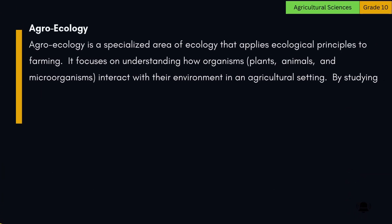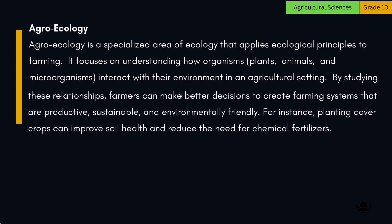Agroecology is a specialized area of ecology that applies ecological principles to farming. It focuses on understanding how organisms — plants, animals, and microorganisms — interact with their environment in an agricultural setting. By studying these relationships, farmers can make better decisions to create farming systems that are productive, sustainable, and environmentally friendly. For instance, planting cover crops can improve soil health and reduce the need for chemical fertilizers.